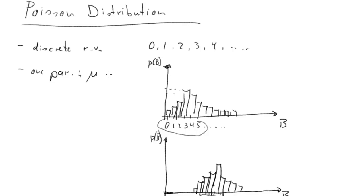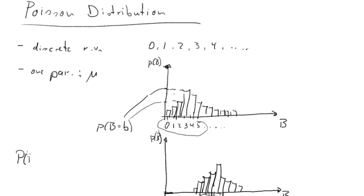Everything we'll do here, as it is a discrete probability, hinges on being able to calculate these probabilities — this height here. So we want to calculate probabilities that our random variable B takes a certain value, let's say little b. We need to know what the formula for this probability is, and it will depend on two things: the parameter mu and the outcome b we are looking at.